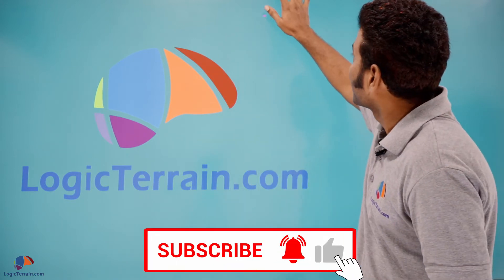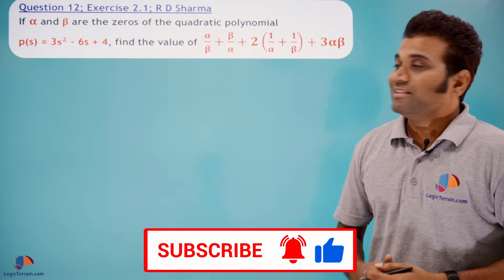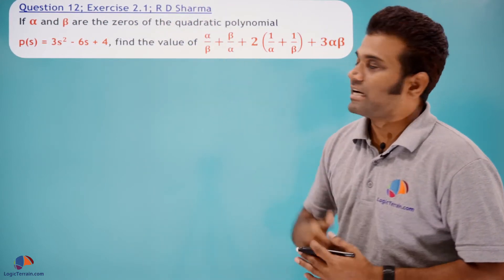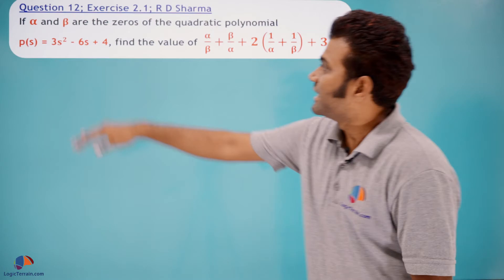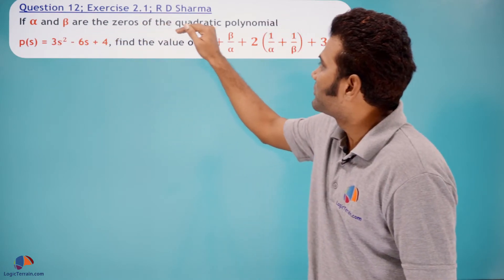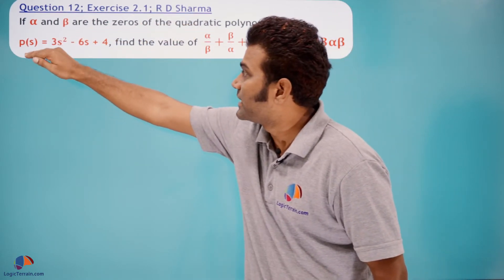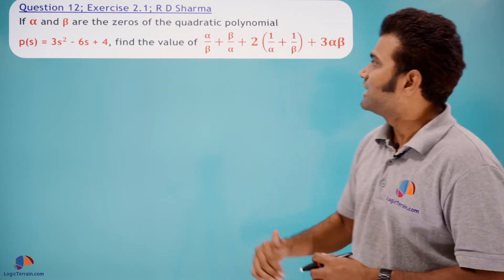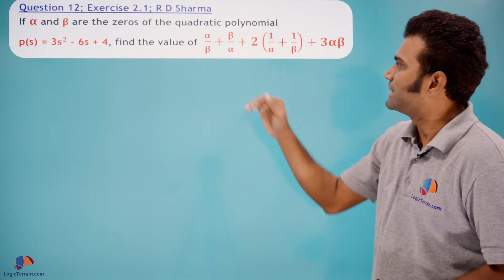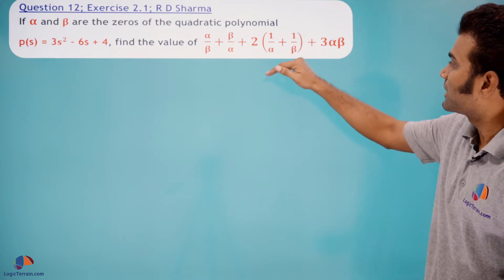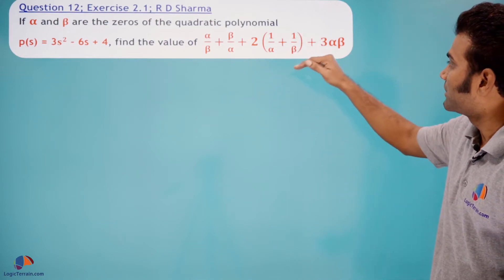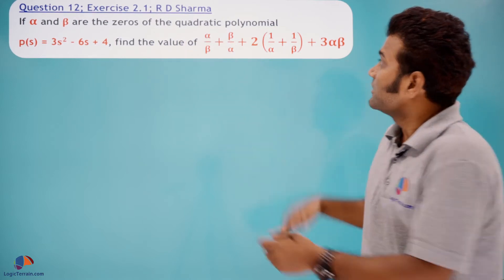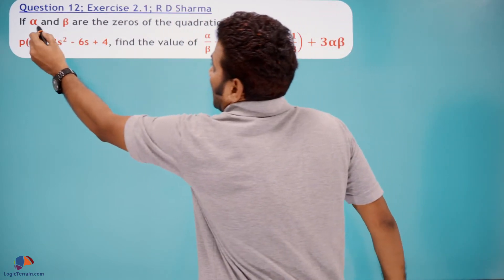Let's move to the question. This is question number 12, exercise 2.1 from R.D. Sharma. The question is: if alpha and beta are zeros of the quadratic polynomial p(s) = 3s² − 6s + 4, then find the value of (alpha/beta + beta/alpha) + 2(1/alpha + 1/beta) + 3(alpha × beta).